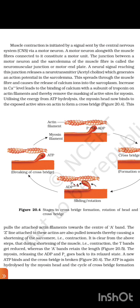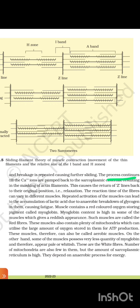Utilizing the energy from ATP hydrolysis, the myosin head binds to the exposed active sites on actin to form a cross bridge. This pulls the attached actin filament towards the center of the A-band. The Z-lines attached to these actins are pulled inward, thereby causing a shortening of the sarcomere — contraction. During shortening of the muscle, the I-band gets reduced whereas the A-band retains its length. The myosin releases ADP and Pi and goes back to its relaxed state. A new ATP binds and the cross bridge is broken. The ATP is again hydrolyzed by the myosin head and the cycle of cross bridge formation and breaking is repeated, causing further sliding. The process continues till the calcium ions are pumped back to the sarcoplasmic cisternae, resulting in the masking of actin filaments. This causes the return of Z-lines back to their original position — relaxation.